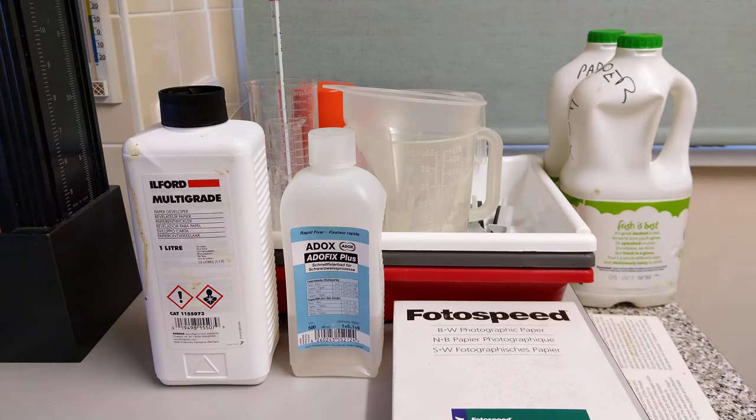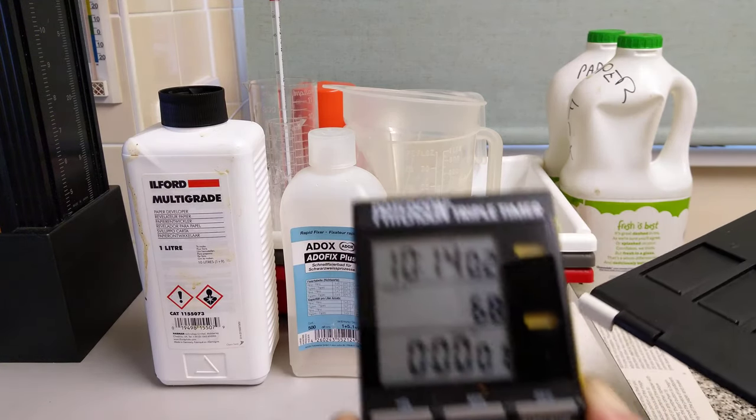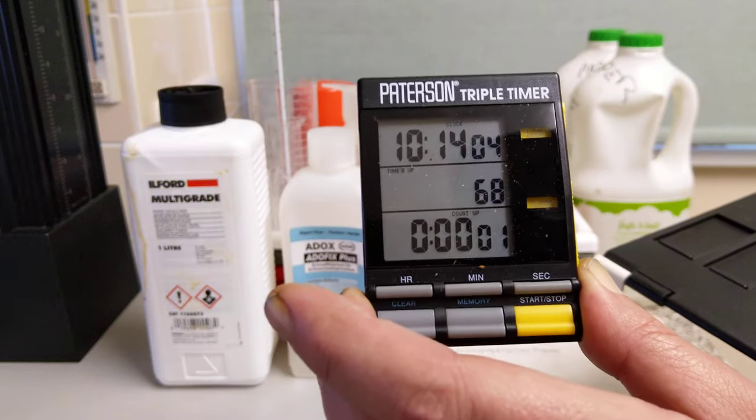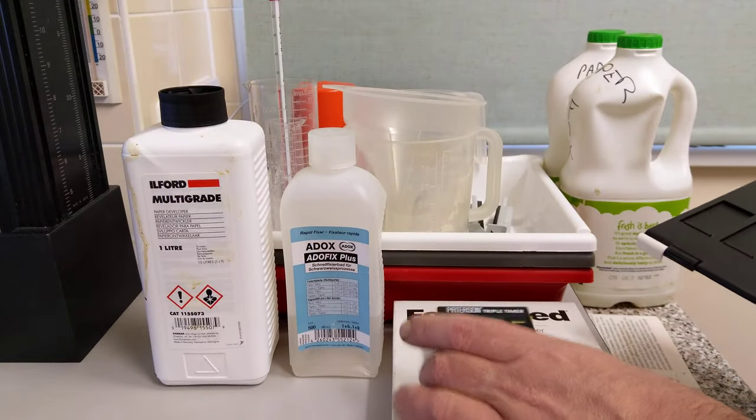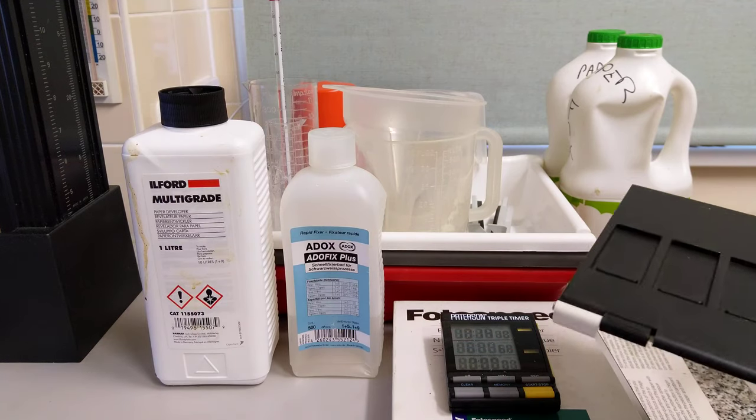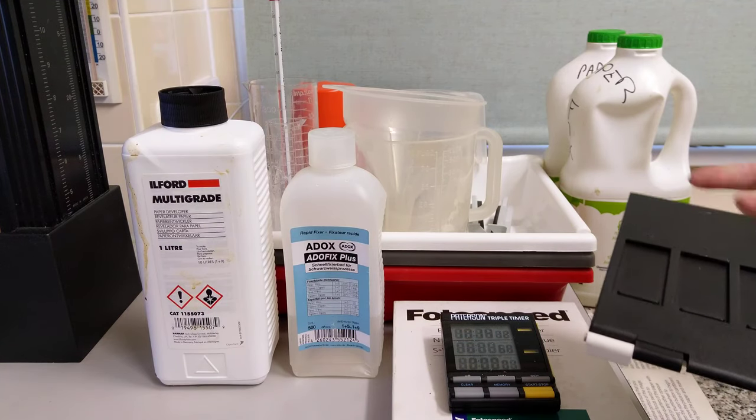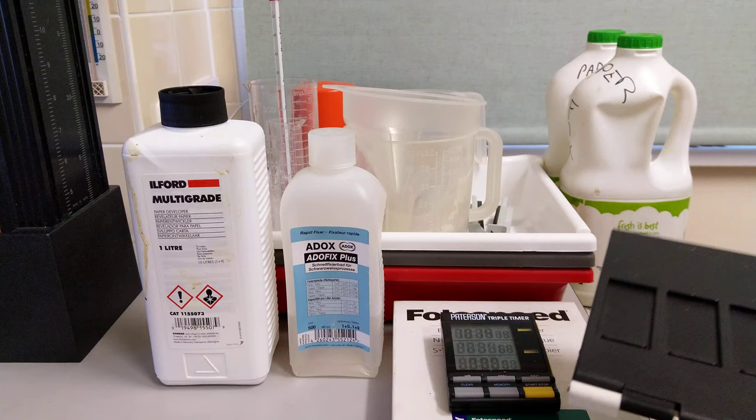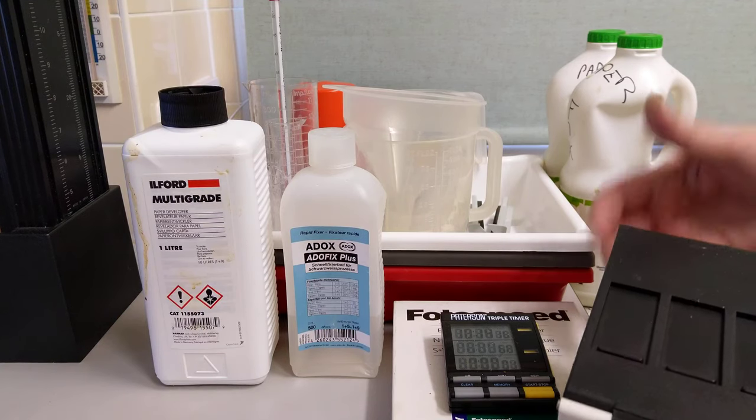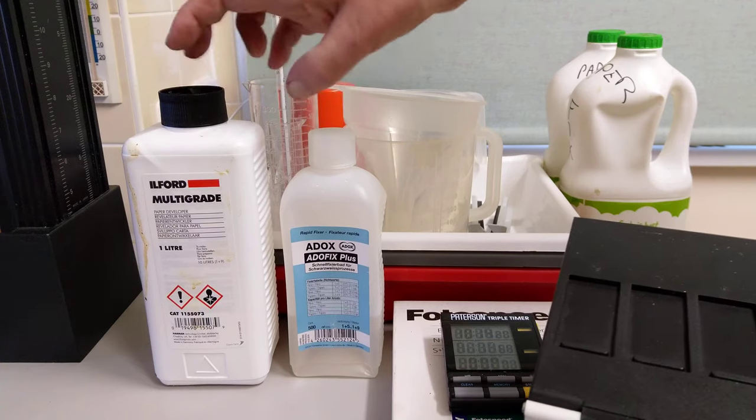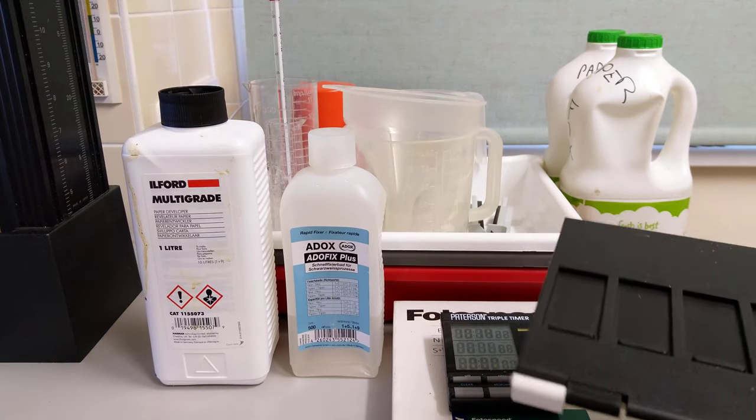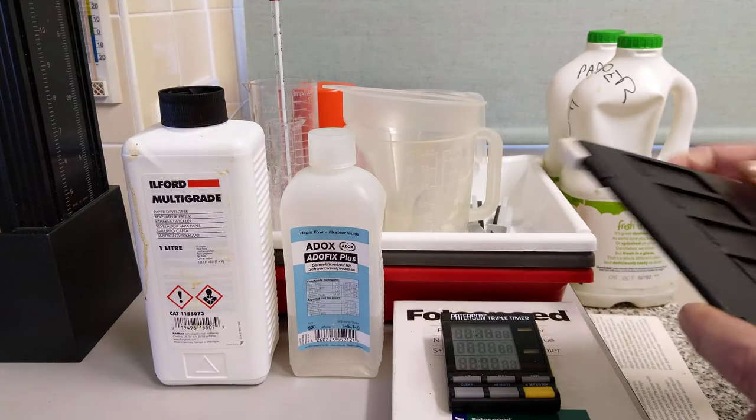That's all you basically need really. Smartphone is useful as a timer. I use one of these little process timers. It's got three different timers built in. It's important if you want to build consistency that your timings and your temperatures and your materials stay very much the same. Don't chop and change. Choose one brand of paper, choose one type of developer and fixer until you've mastered the art and are happy with the results, then you can begin experimenting.